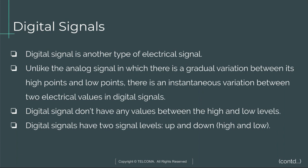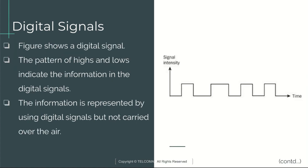Next is digital signals. A digital signal is another type of electrical signal. Unlike the analog signal, which has a gradual variation between its high and low points, a digital signal has an instantaneous variation between two electrical values: 0 and 1. Digital signals don't have any values between the high and low levels; they have two signal levels — high and low, or one and zero.